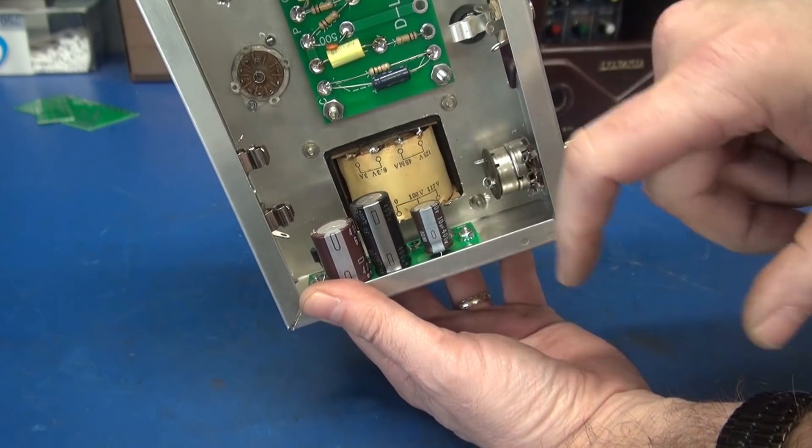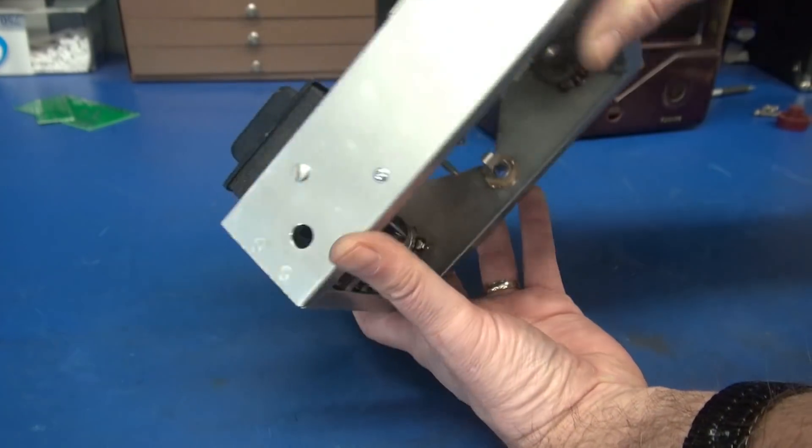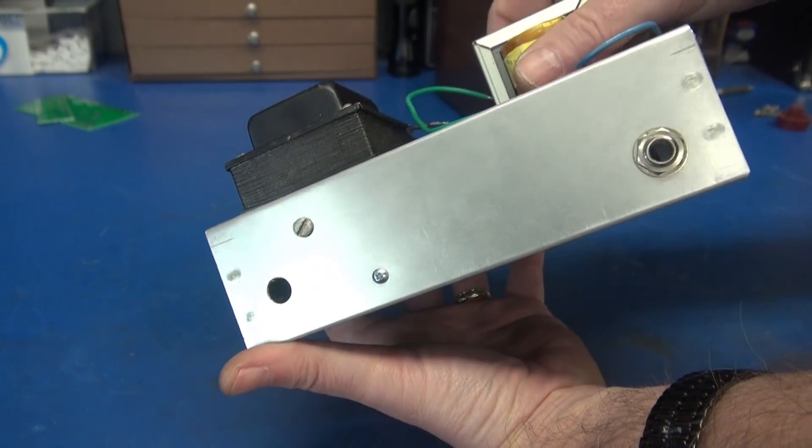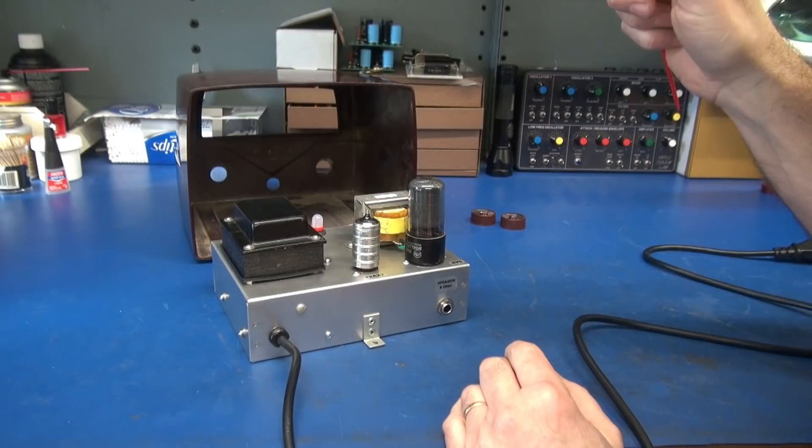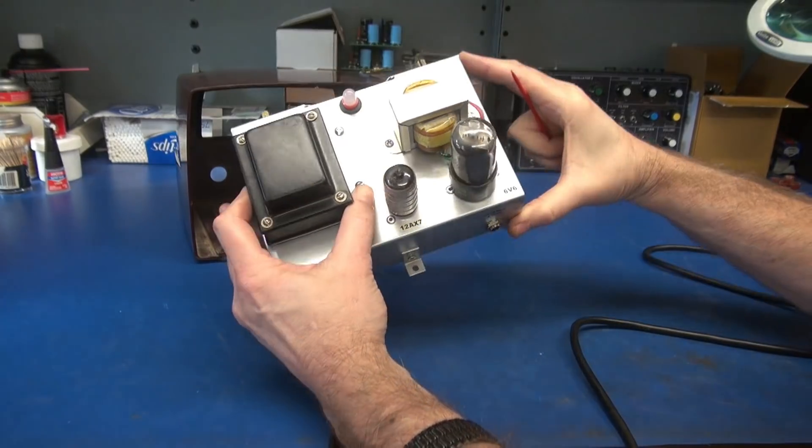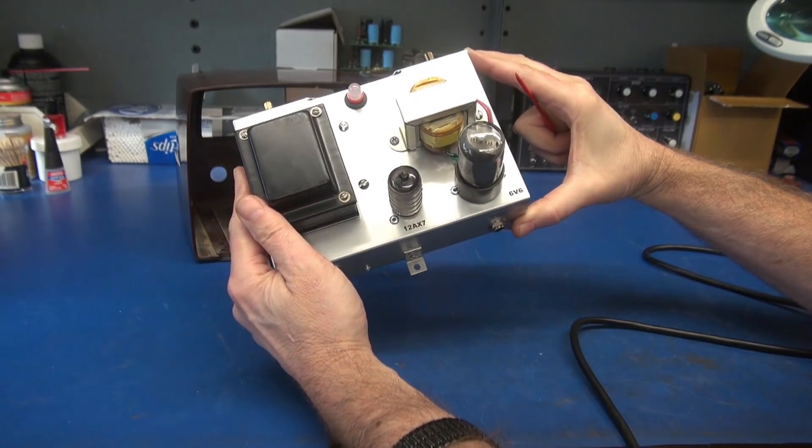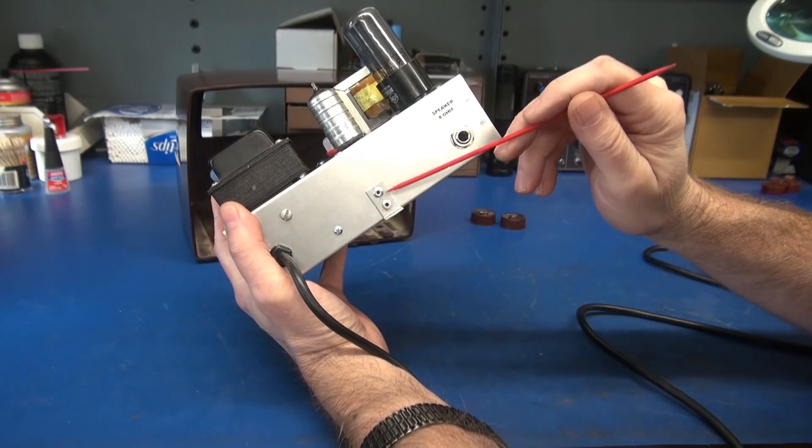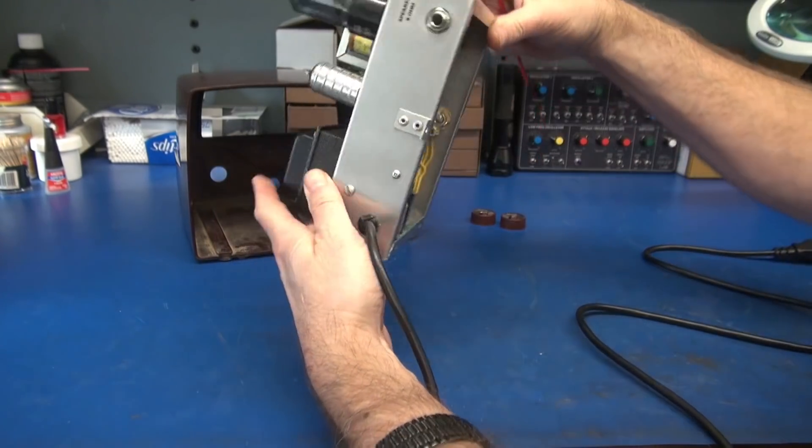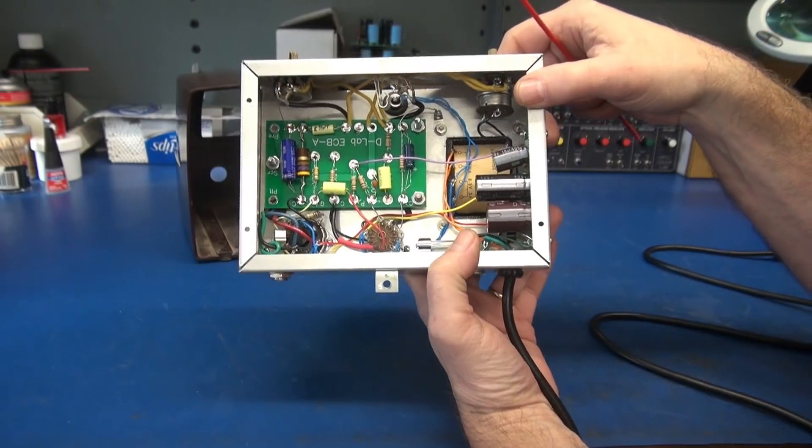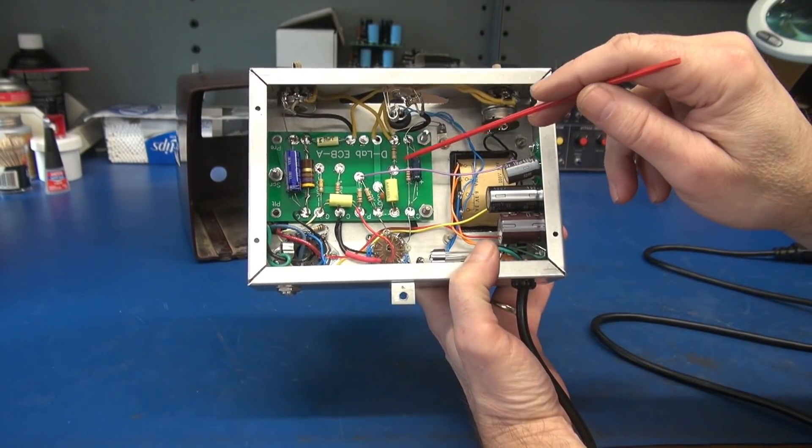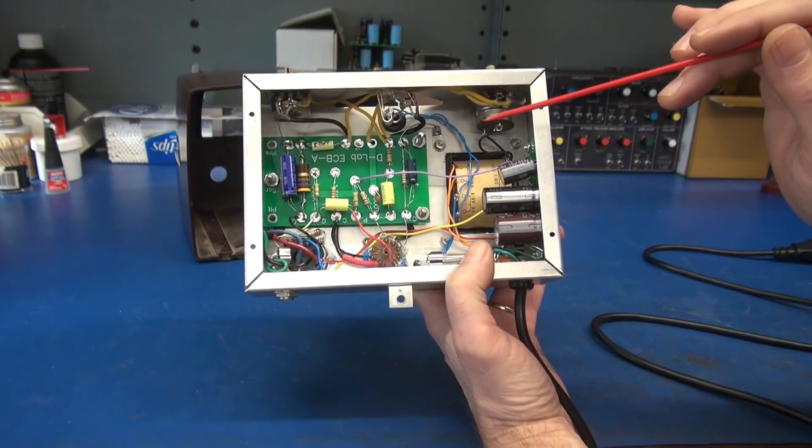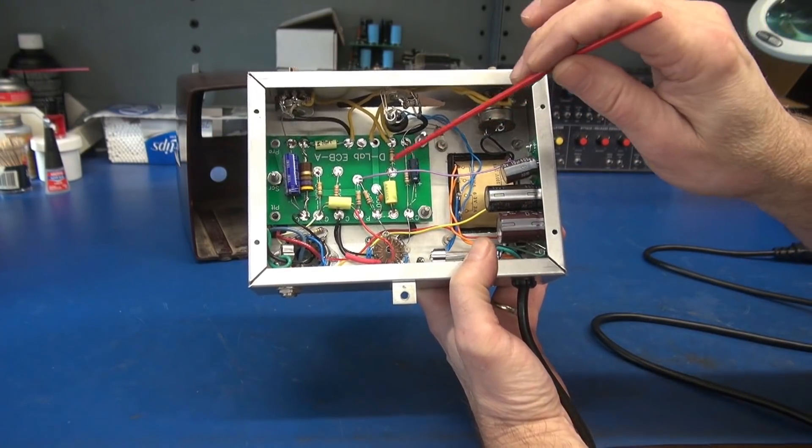This wiring will exit through this little grommet to the bottom of the board to feed the 6V6 and the speaker output jack. There's the ECBA board ready to be wired up. I simply swing wires down to the tube sockets. There's very little wiring involved in these amps because that board does the job for you. Over here you can see our power transformer and our power supply board, fuse holder.